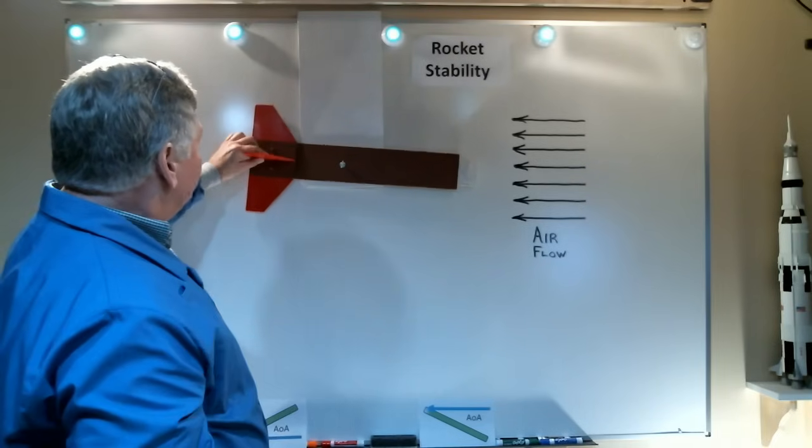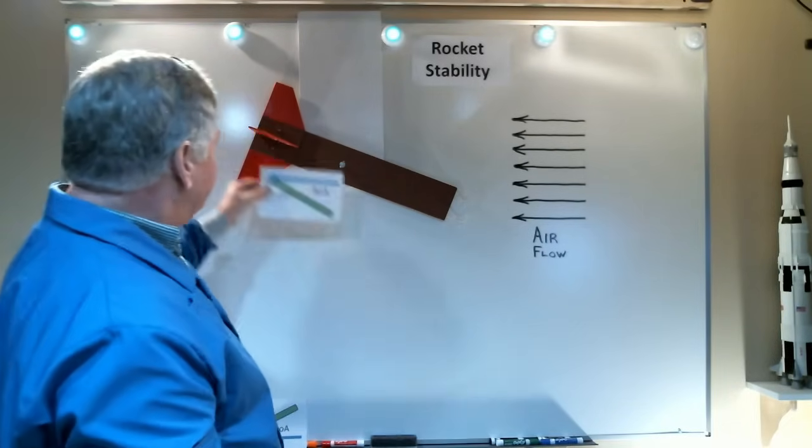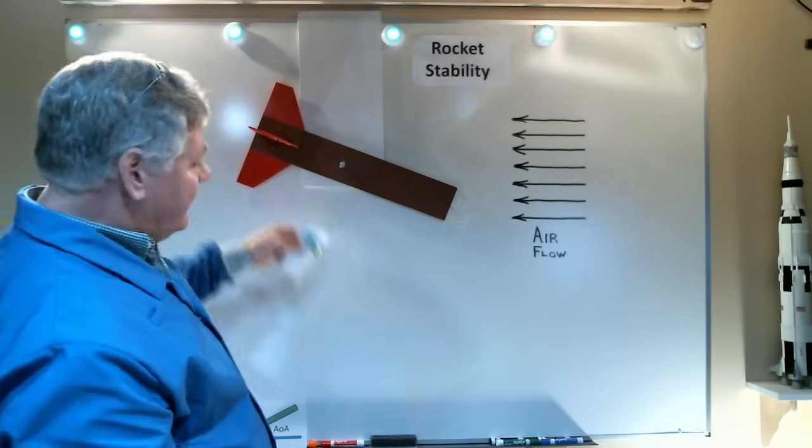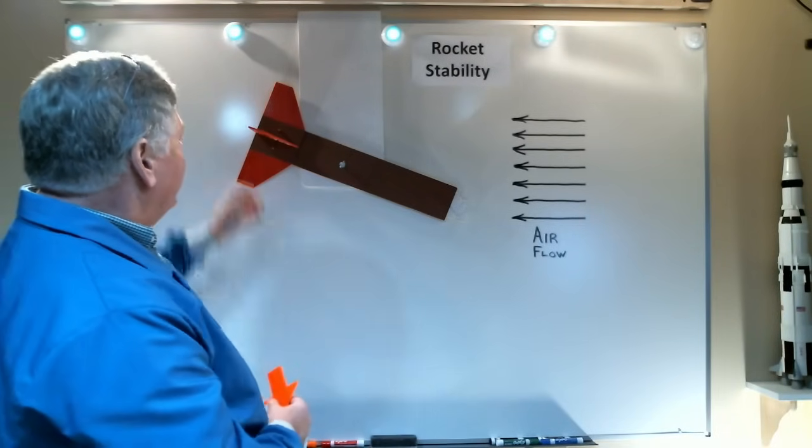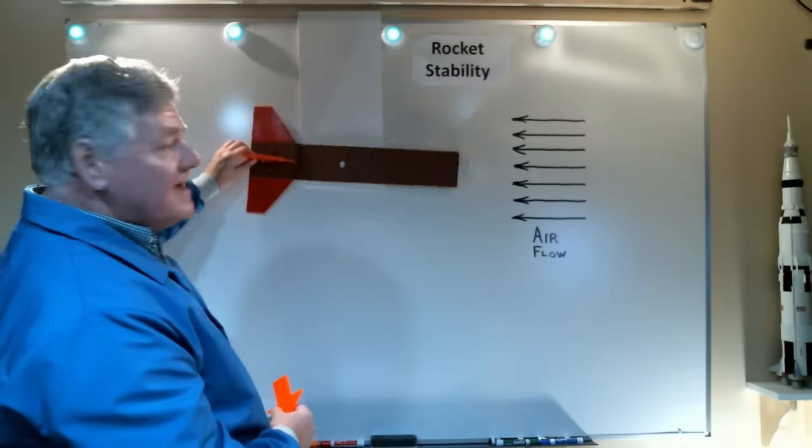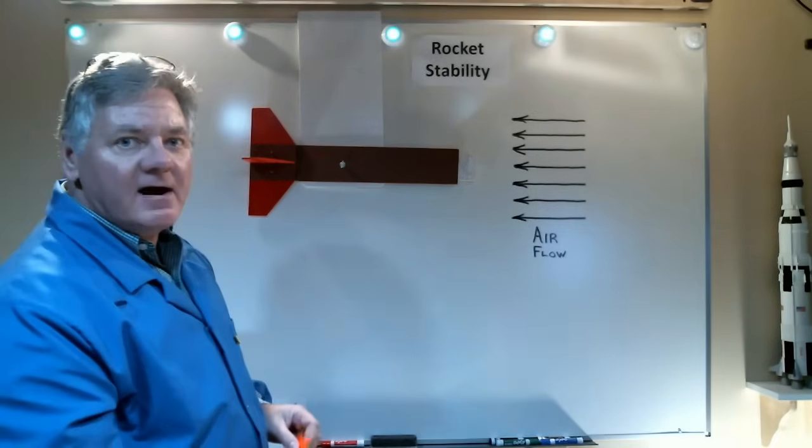Now, the rocket will tend to overshoot. When that happens, we get a negative angle of attack, and that creates a lifting force downward, again, correcting the rocket. So it's oscillating back and forth, trying to get its nose pointed into the airflow.